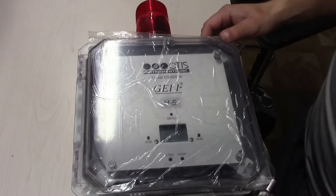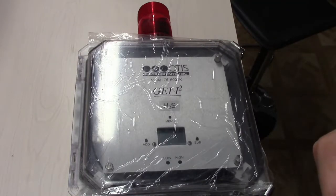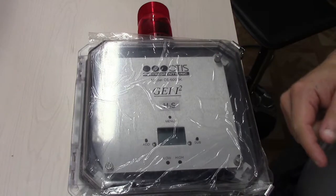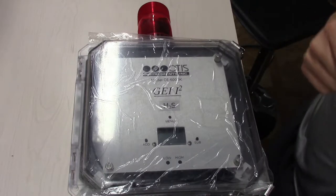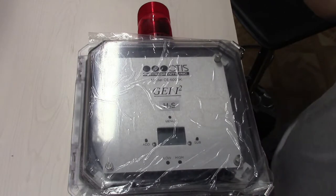All right, hey everybody. My name is Alex, I'm the product manager at Diamond Scientific. Got another product overview. This is the OI 6000K from Otis Instruments. This is a single gas monitor that can be installed as a stationary unit.